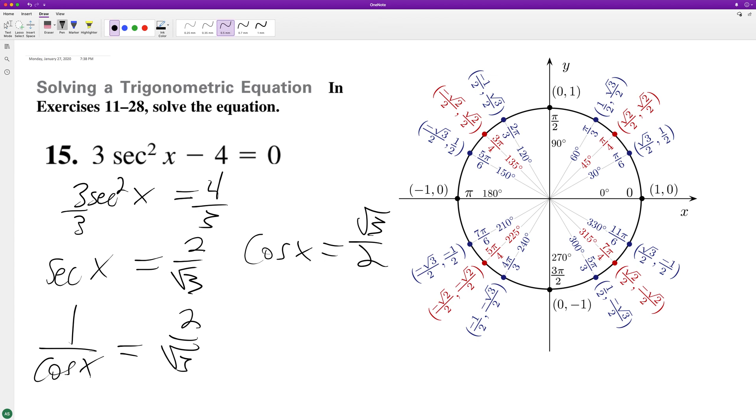In this instance, it looks like π over 6, and we're looking for the positive value. And then it looks like 11π over 6. So π over 6 and 11π over 6.